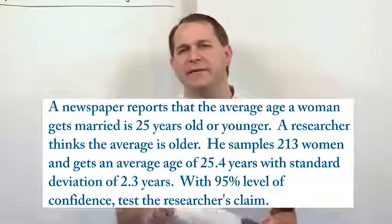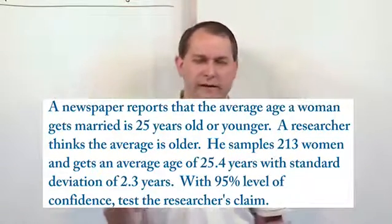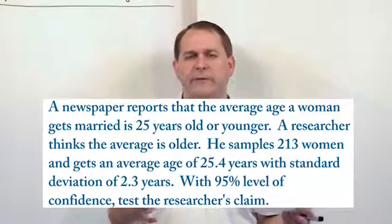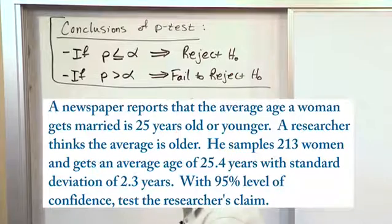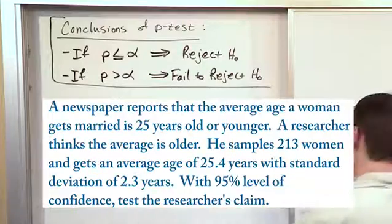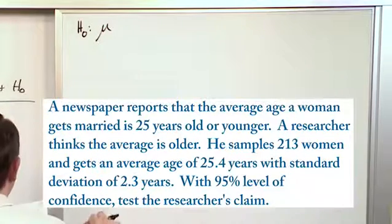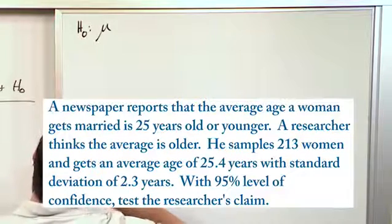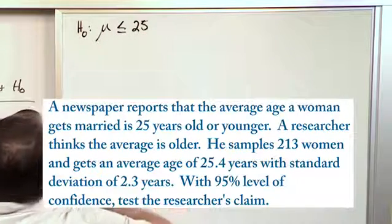The format of this problem is essentially the same as what we've been doing in the past — you have to figure out the null and the research hypothesis. In this case, both are dealing with the age that women, on average, tend to get married. I left the requirements for rejecting the null hypothesis on the board here, and we'll refer to that later. The null hypothesis is a mean value of age. The newspaper reports the average age of women who get married is 25 years old or younger, meaning less than or equal to 25.